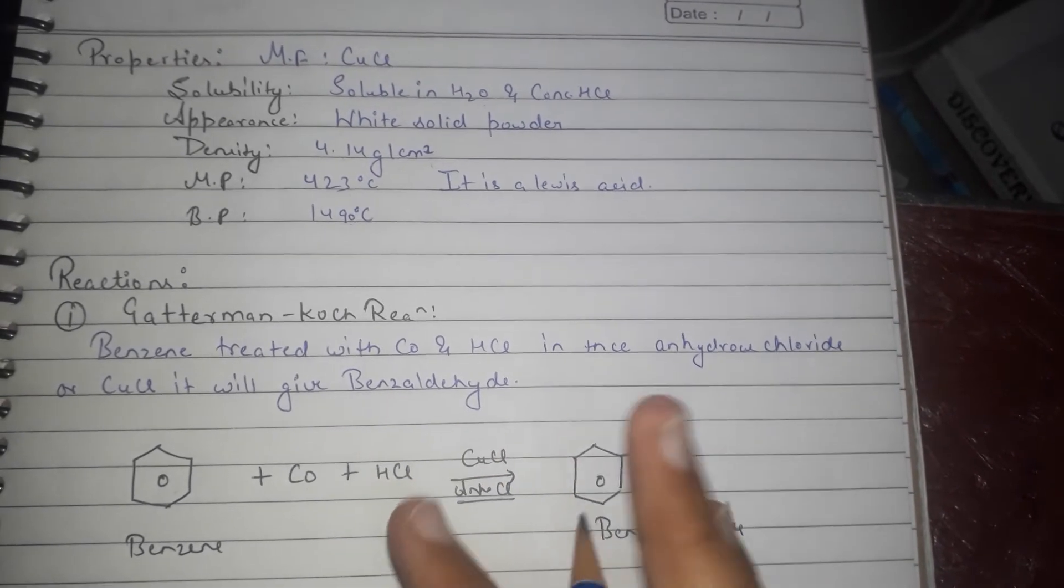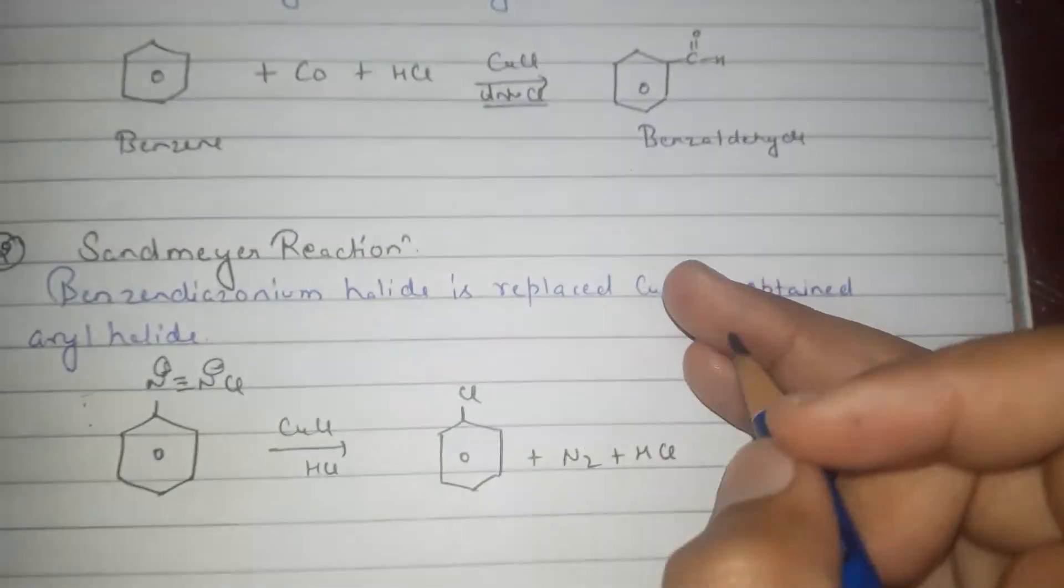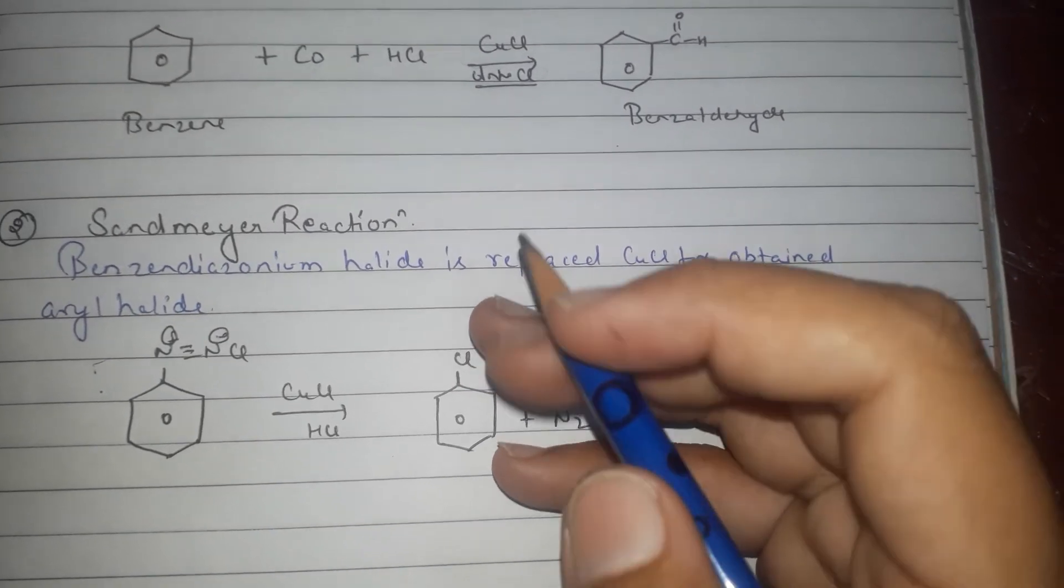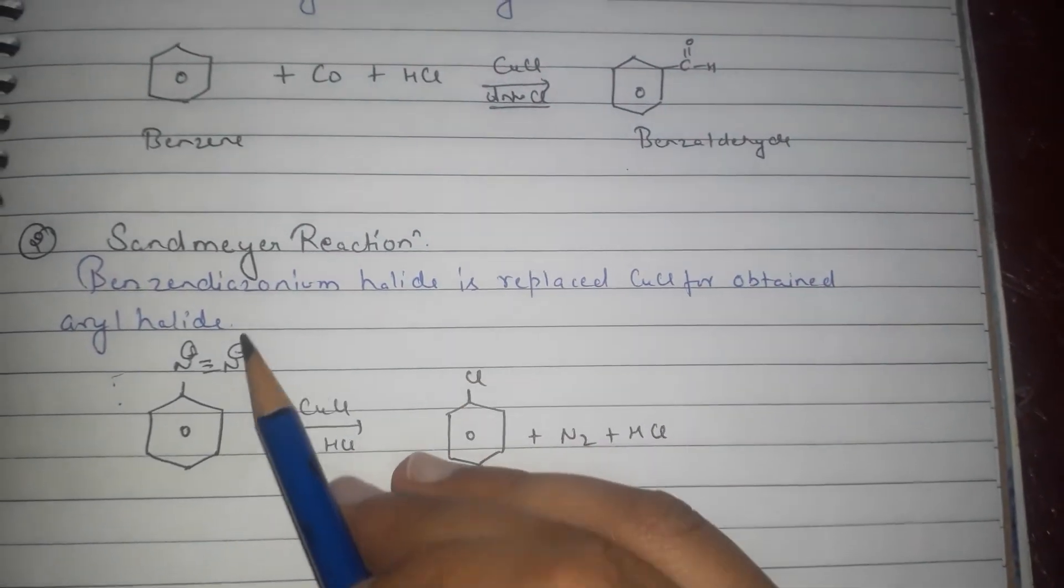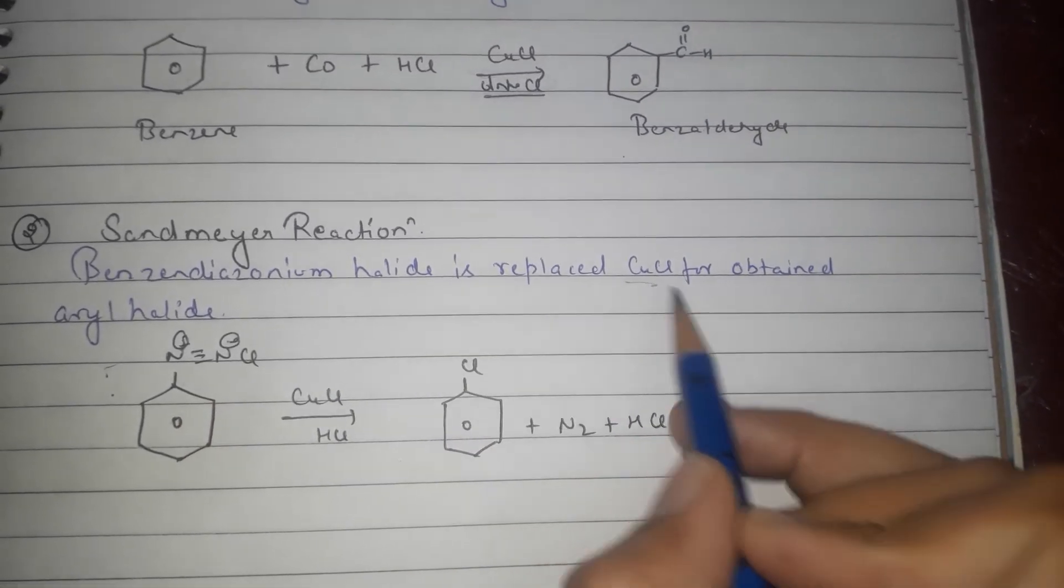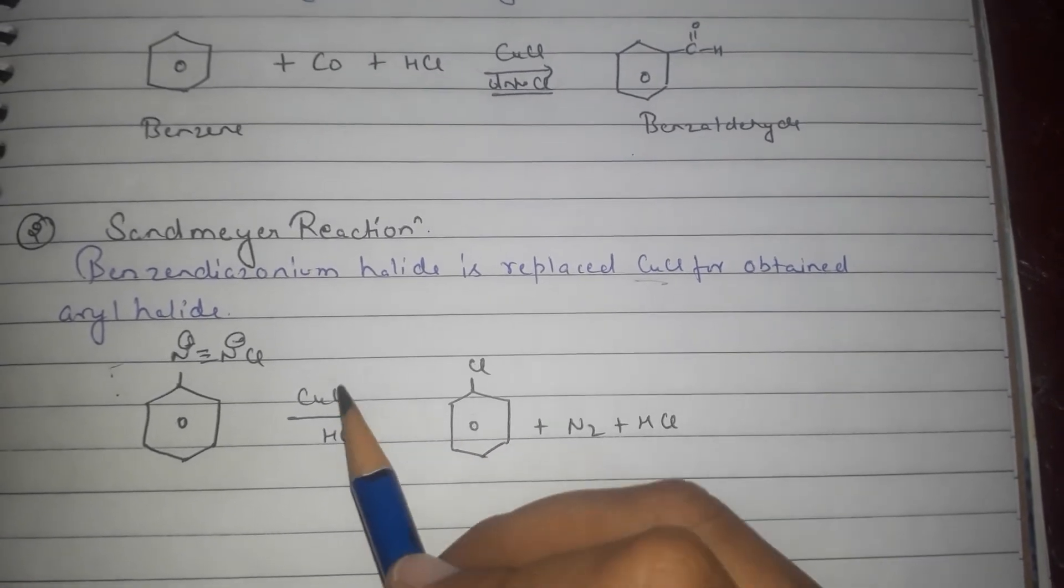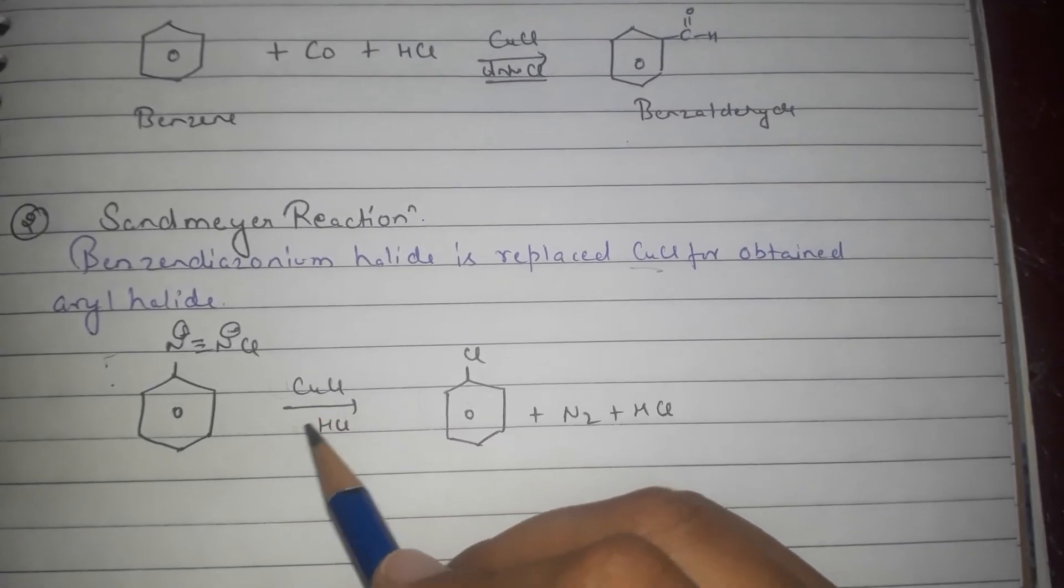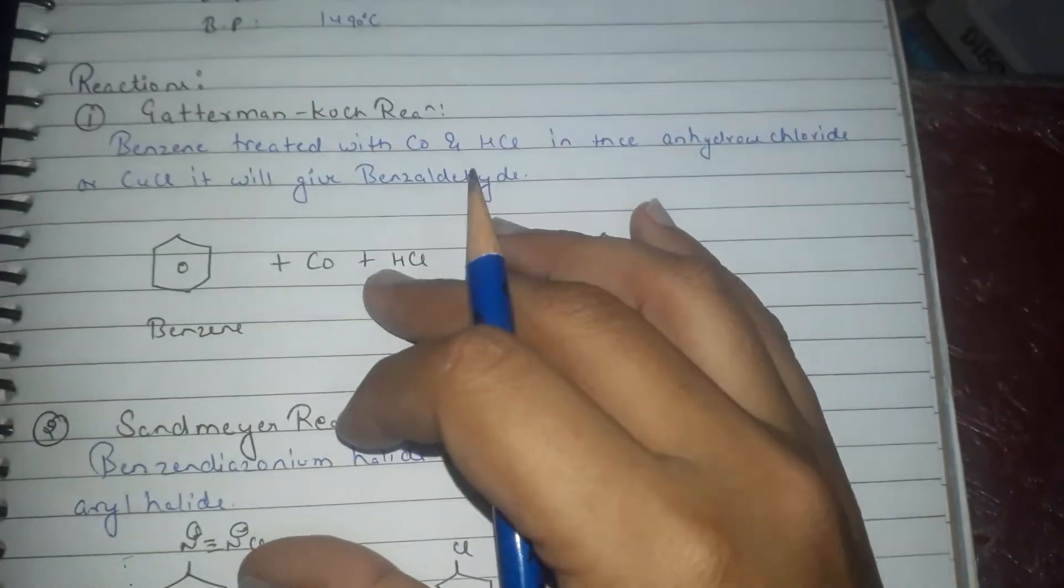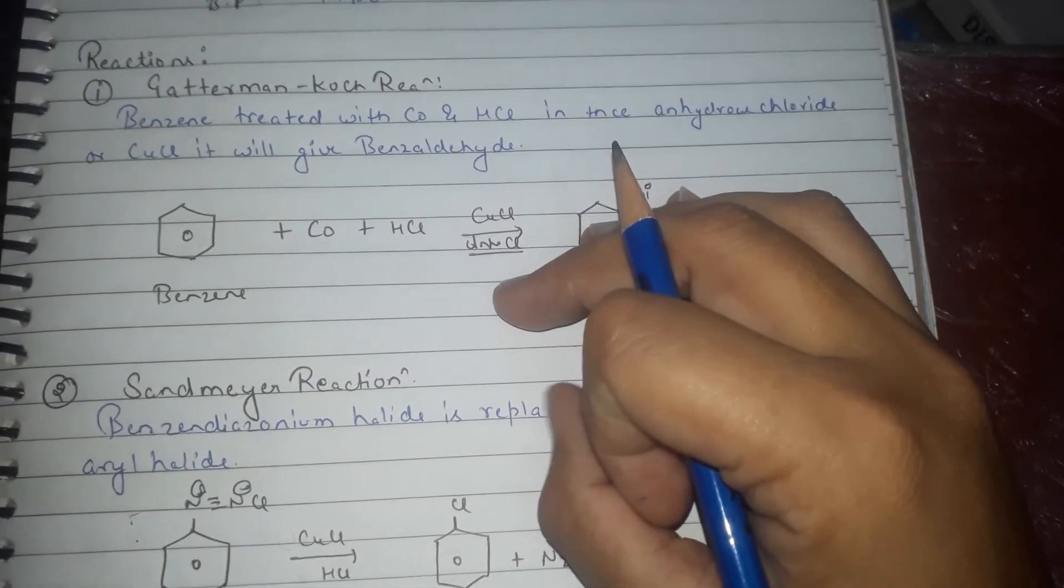Another Sandmeyer reaction using cuprous chloride: benzene diazonium halide is replaced by CuCl to obtain aryl halide. So this is the Sandmeyer reaction. In presence of CuCl and HCl it will give chlorobenzene. These are the two reactions in which we use CuCl.